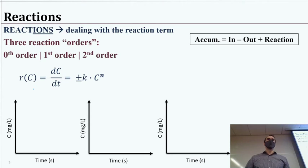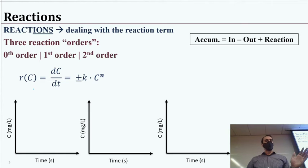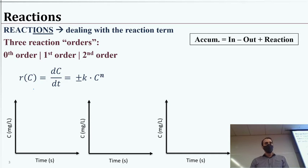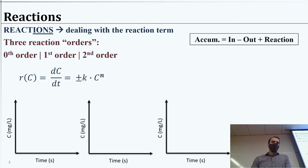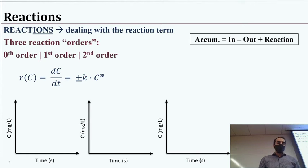A bank account having $100 deposited every month is changing on a zero order — it doesn't matter how much is in there. If you're growing interest at 10% of what's in there every year, that depends on the balance, so that's first order. A generic reaction equation: the reaction of C equals dC/dt, which is plus or minus a reaction rate constant K multiplied by the concentration C to the nth power, where n is 0, 1, or 2.